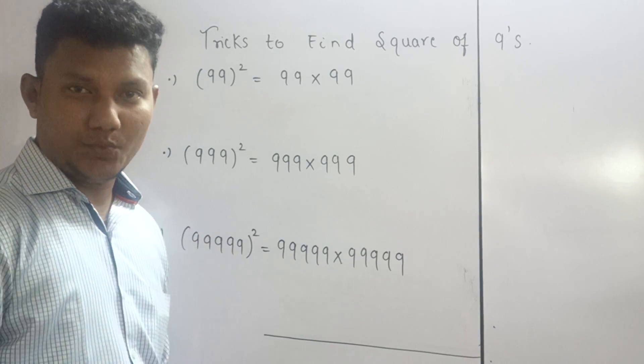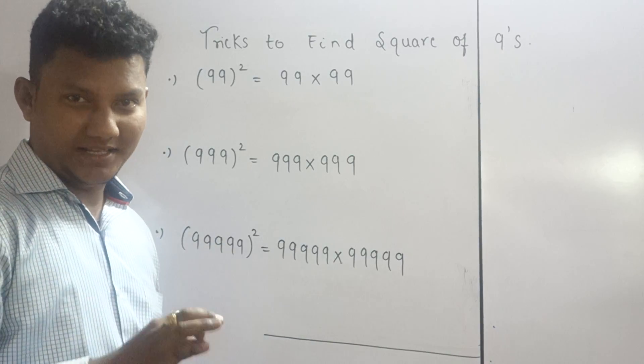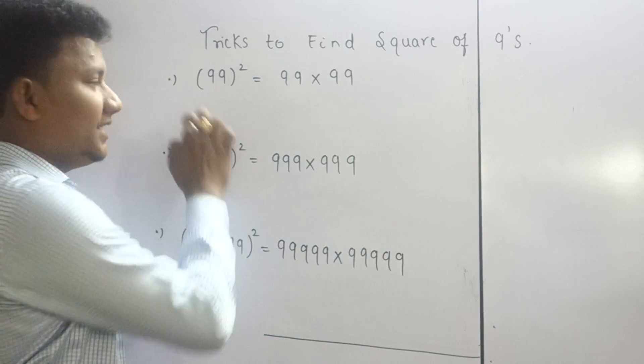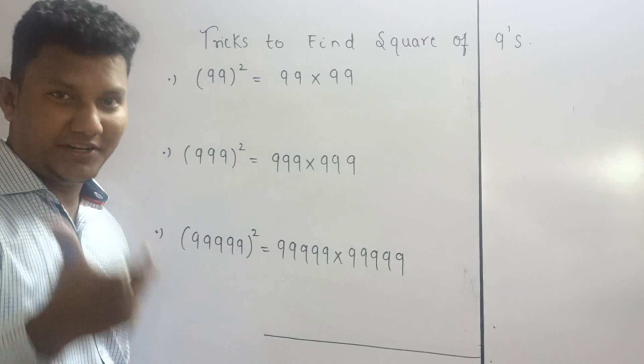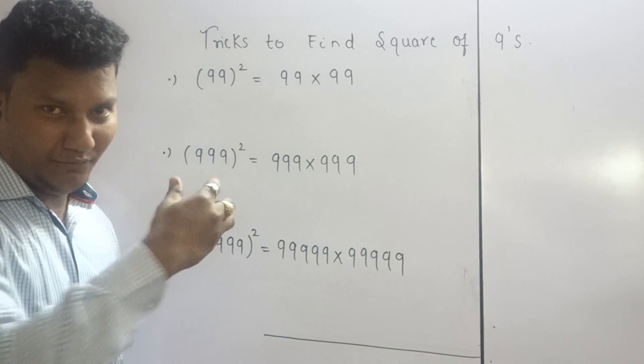That means 9 square, 99 square, triple 9 square and so on. Let's begin with the concept. Tricks to find the square of any 9's.